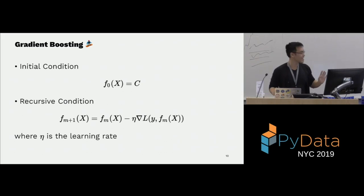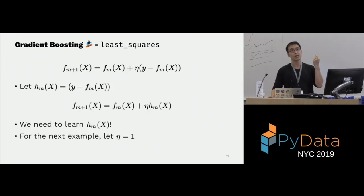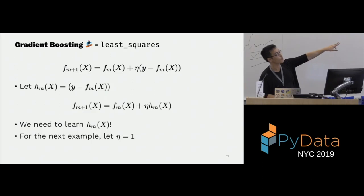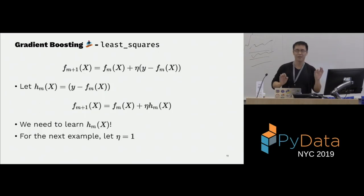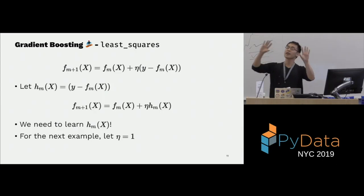We had the gradient from the squared loss and we plug it back in, defining our function h(m) to be that portion. If you squint, you can see that h(m) is the negative gradient. This becomes a recursive relationship: you start with a constant and then add on these functions h(m), and it slowly converges to your prediction. So the goal is: what is h(m)? How do you get these h(m)'s?